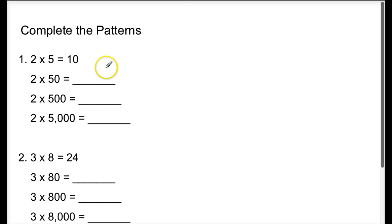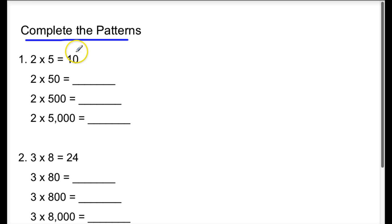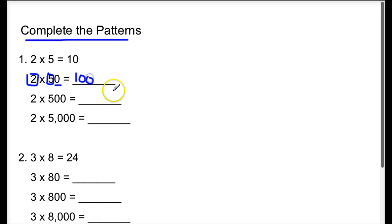Now we're going to look at patterns — completing patterns. Two times five is where we're going to start. That's a basic fact, and the product will be 10. So we look at our basic facts: two times five is 10. Underline that zero to make sure we put the right amount. So two times 50 will be 100.